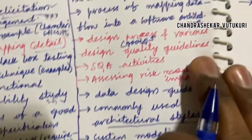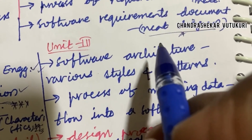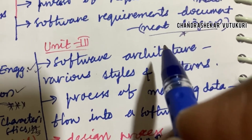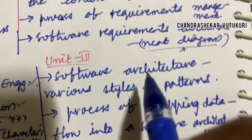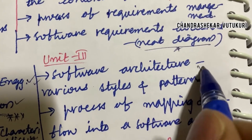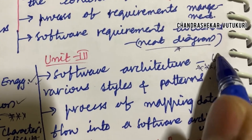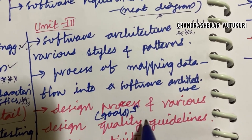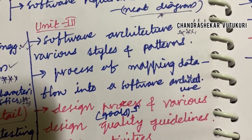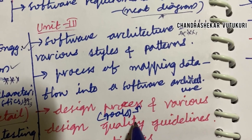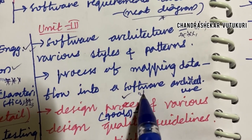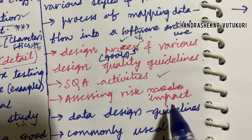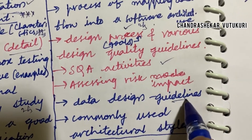Let's jump into Unit 3. As the course is too lengthy in structure, they may be asking in-depth questions as well as general questions. Software architecture and the various styles and patterns is said to be a top most question, which may be a 6-mark question. The process of mapping data flow in the software architecture and design process, and the various design quality guidelines and goals of a design process, may be a two or three mark question.